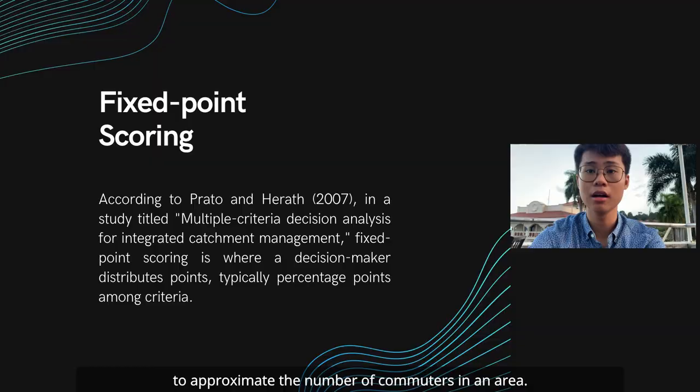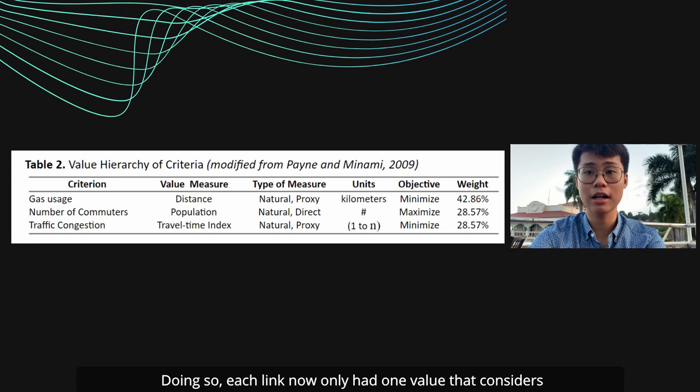To combine these three criteria into one, data gathered from each criterion was normalized then aggregated through fixed point scoring, in accordance with the value hierarchy in Table 2. Doing so, each link now only had one value that considers all three criteria.